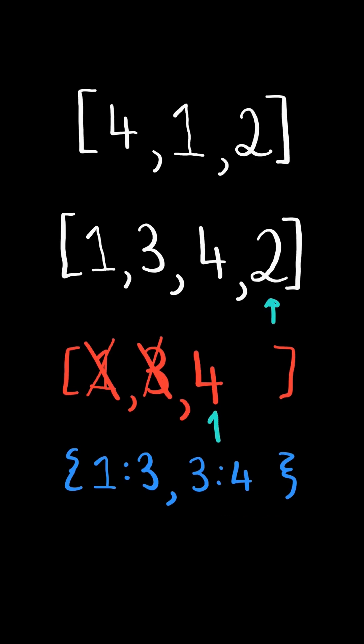Now the current number is less than top of stack, so we append the current number. And the remaining elements in the stack get mapped to negative 1.